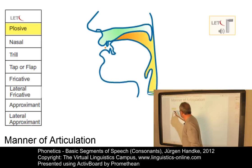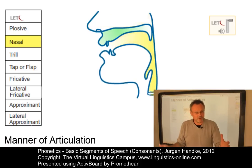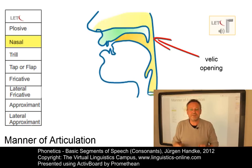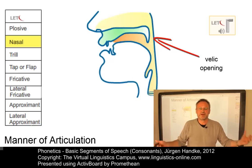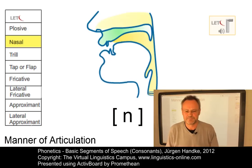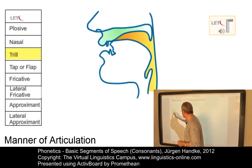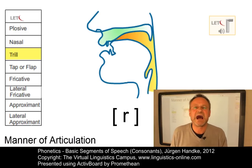In nasal consonants, we have an oral closure too, but this time we have a velic opening, allowing the airstream to escape through the nose — the result is 'a-na'. Trills involve rapid closures and openings, and the result is 'a-ra'.